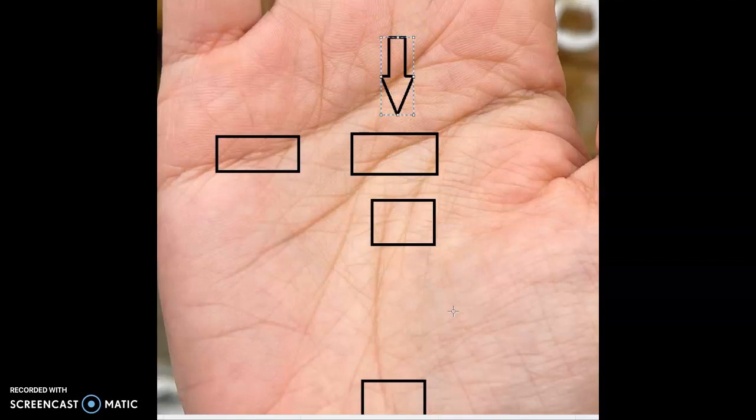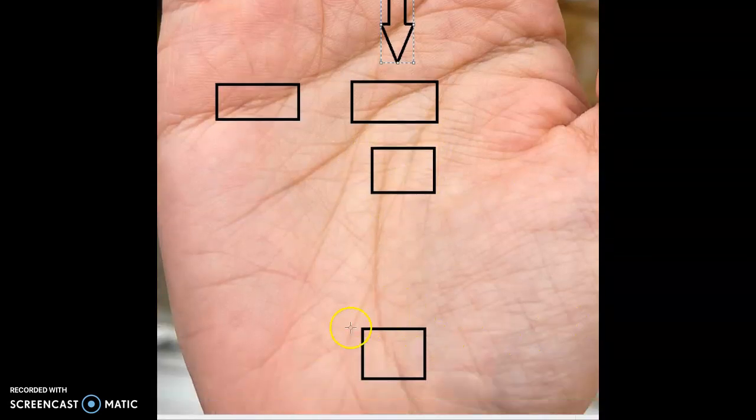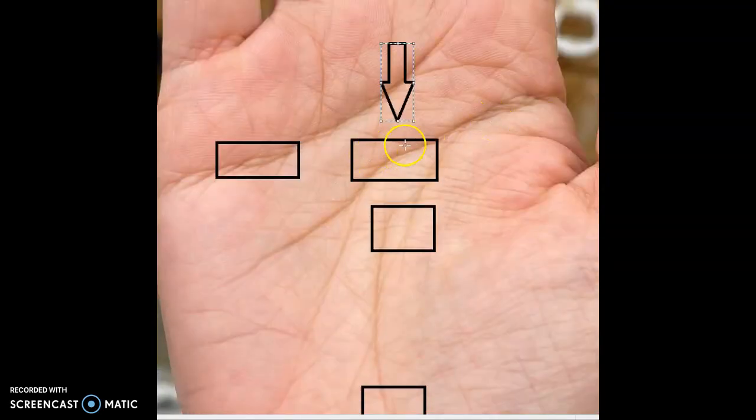So one thing we can clearly say that Saturn is not acting positive for the person. It's creating an island, it's creating a difficulty in general health, then it's also creating some difficulty with respect to general vigor. Now when it's happening on the headline it can typically mean a small island on the headline.